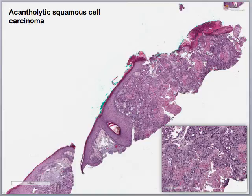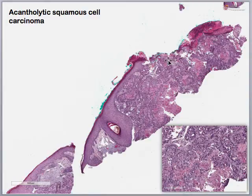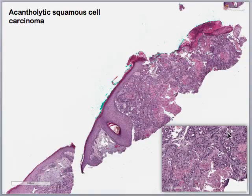On low power view we see an ulcerated lesion with cells originating from the epidermis and expanding into the dermis. Within these cells you have areas of acantholysis, highlighted by white areas where you can see the slide underneath. On high power view we can see not only the acantholytic areas but also that these cells are very atypical. Atypical keratinocytes coming off the epidermis into the dermis with acantholysis gives us a diagnosis of acantholytic squamous cell carcinoma.